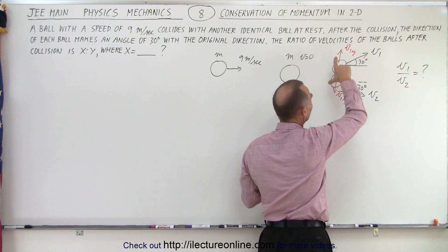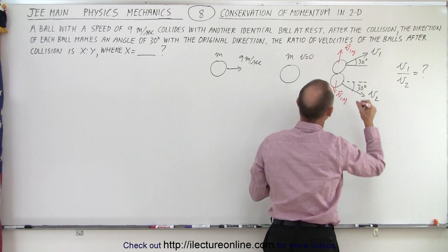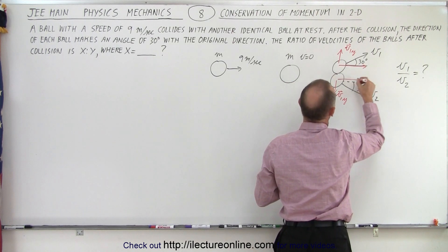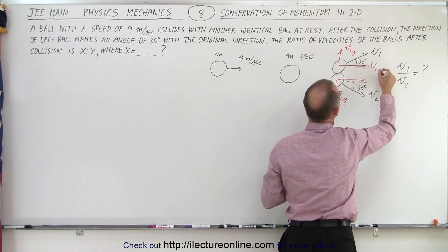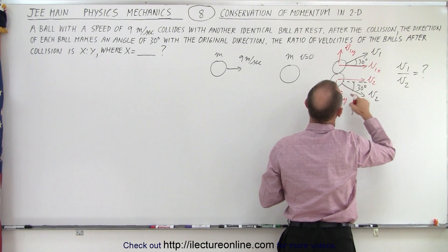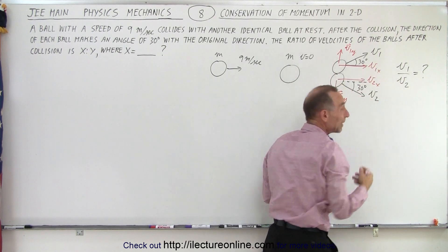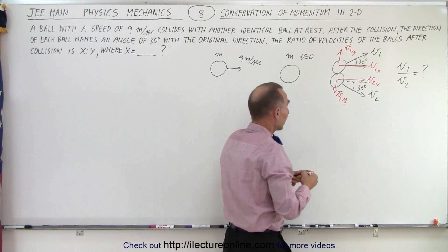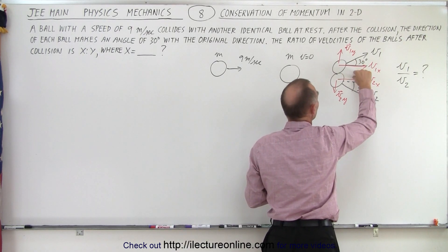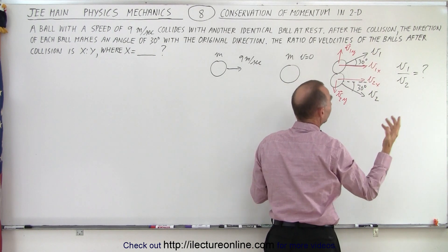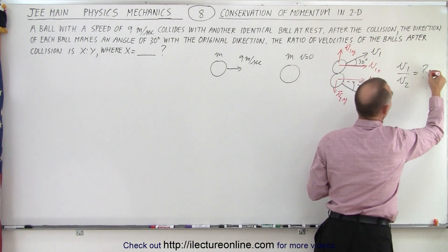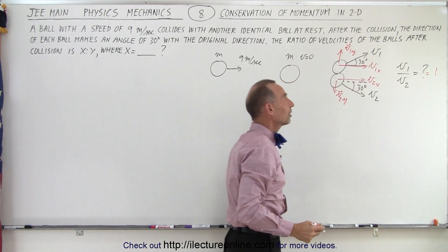Which means that the horizontal components v1 in the x and v2 (this should be v2 not v1) v2 in the x, those must be equal in magnitude as well. And of course if these two are equal in magnitude and those are equal in magnitude, now v1 must equal v2. And the only answer is that the ratio is equal to one, one to one, and so x to y would be one to one like that.